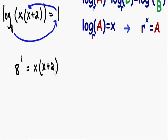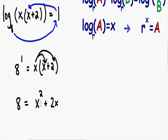Before we move on, let's simplify. On the left hand side we have 8 to the 1st power, which is just 8. On the right hand side we can distribute: x times x is x squared, and x times 2 is positive 2x. Notice we have an x squared term, so this is a quadratic equation. To solve it, I'm going to make everything equal to 0 and then factor, so I'll subtract 8 from both sides.